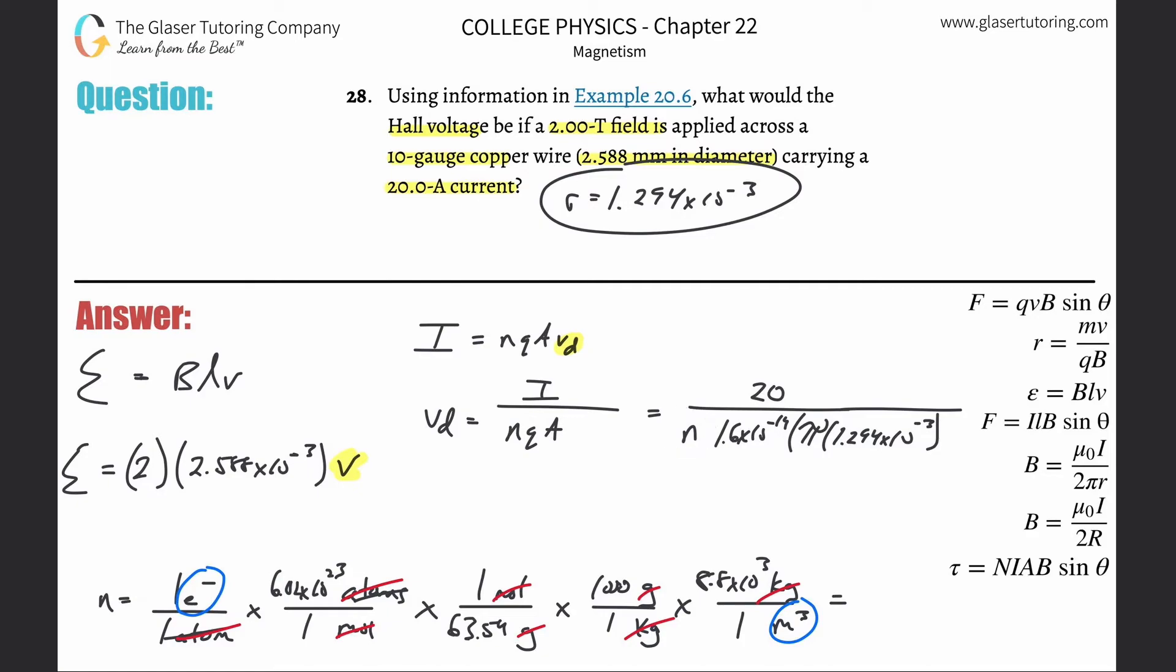So it's going to be 6.02 times 10 to the 23rd times 1000 times 8.8 times 10 to the third, then divide that by 63.54. I get about 8.34 times 10 to the 28th electrons per cubic meter. Those are all in the right units, so simply take that now and plug it in.